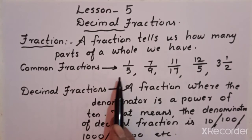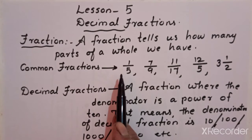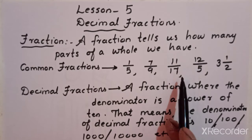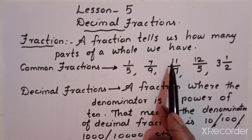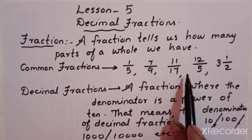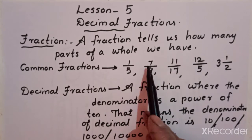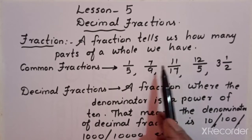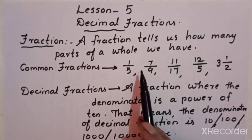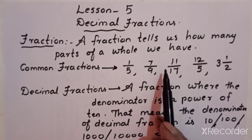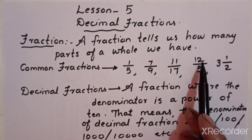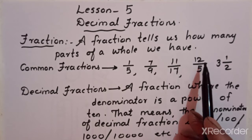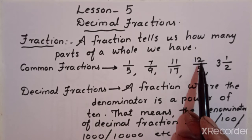Here are examples of common fractions: one upon five, seven upon nine, eleven upon seventeen — all these are proper fractions, meaning less than one and greater than zero. Twelve upon five is an improper fraction — this is greater than one. We can divide it and convert it into a mixed number, which is also greater than one.